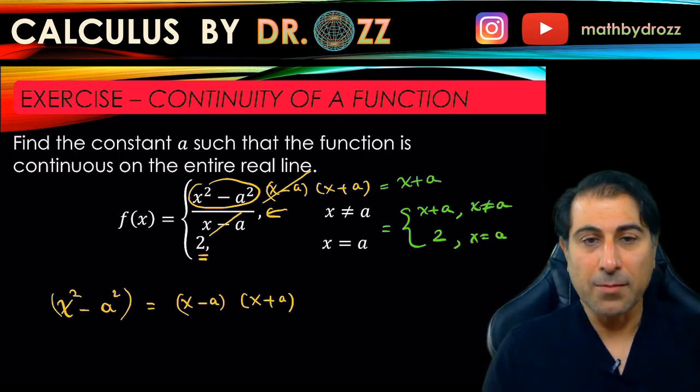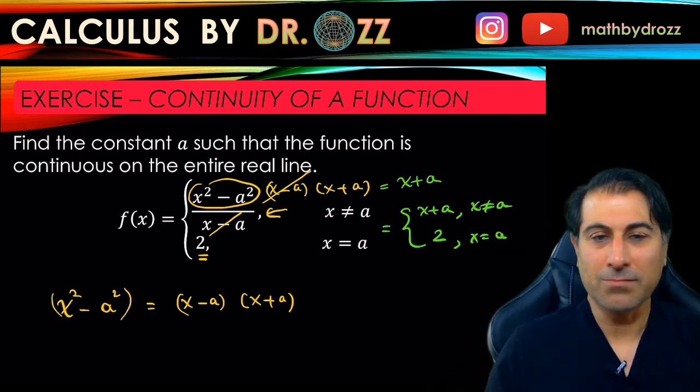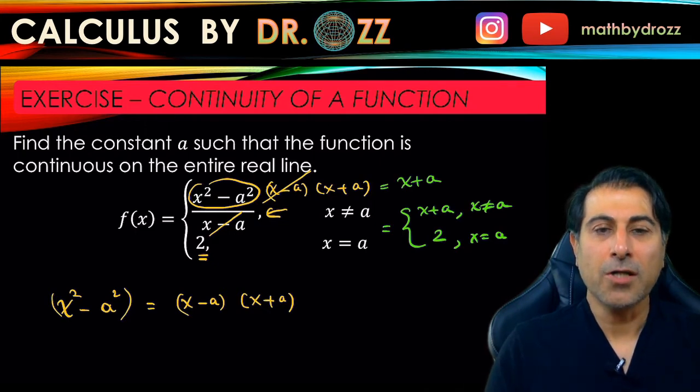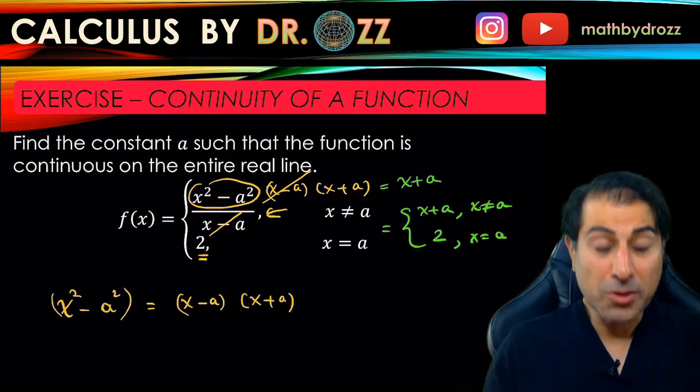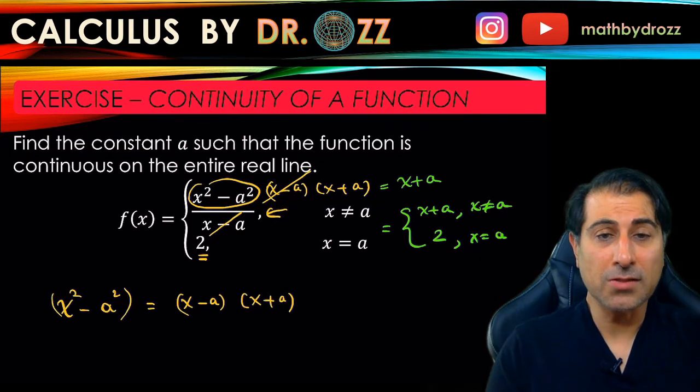So now staring at the piecewise function again, the top piece is a polynomial, it's a nice function, x plus a linear function, and the bottom piece is just equal to 2. All we're going to do is show what's going on at the junction point because otherwise, other than x equals a, these two pieces are perfectly continuous.